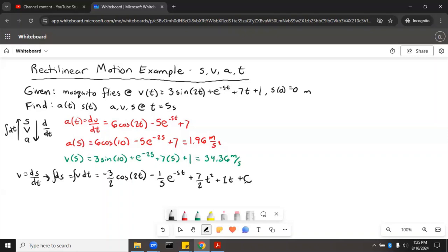So this constant of integration, we'll be able to figure out what that is using the initial position s of 0 equals 0. Got to remember that plus constant. So now if we plug in s of 0 equals 0, say s of 0 equals 0 equals cosine of 0 is 1, so we'll have negative 3 halves, e to the 0 is 1, minus 1 fifth, and then plus t squared, which is just 0, 1t, which is also 0, plus constant. So now the constant is going to equal the 3 halves plus the 1 fifth. So if we add those to get a common denominator of 10, we'll have the 3 times 5, which is 15 tenths, and then that 1 fifth becomes 2 tenths. So 17 tenths equals c.